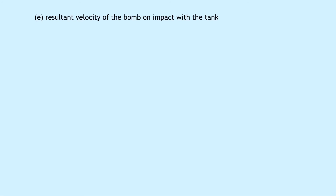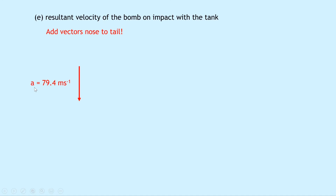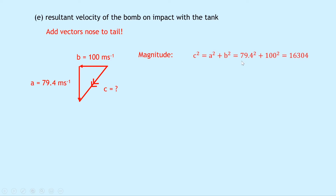Part E asks to calculate the resultant velocity of the bomb on impact with the tank. Since we need the resultant velocity, we take into account both vertical and horizontal components of the final velocity, adding vectors nose to tail — just like with resultant force vectors. Drawing the two vectors: the final vertical velocity is 79.4 meters per second downward, labeled A, and the final horizontal velocity is 100 meters per second, labeled B. The resultant C is found using Pythagoras: C squared equals A squared plus B squared, giving 79.4 squared plus 100 squared equals 16304, so C equals the square root of 16304, which equals 128 meters per second.